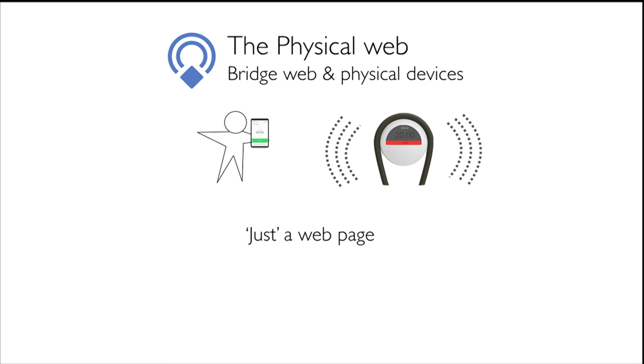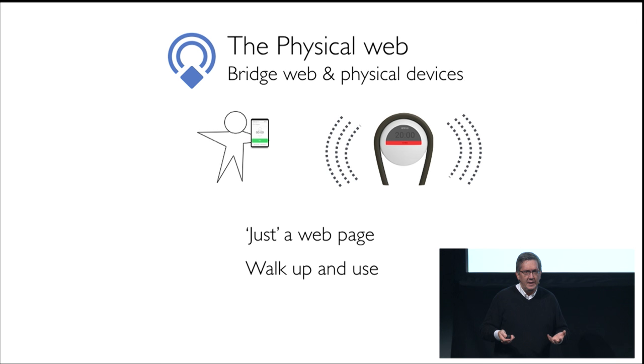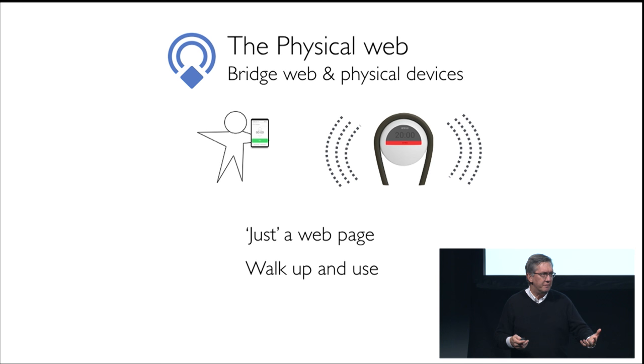You walk up to a parking meter, it's broadcasting the URL, you can see it and in you go. We're not really asking for much — we just want things to have their own web pages. It's kind of flipping the whole problem on its head. You could literally walk up and use anything: a vending machine, a parking meter, a movie poster, even a lost dog collar. Every device has this virtual note card of just more information.